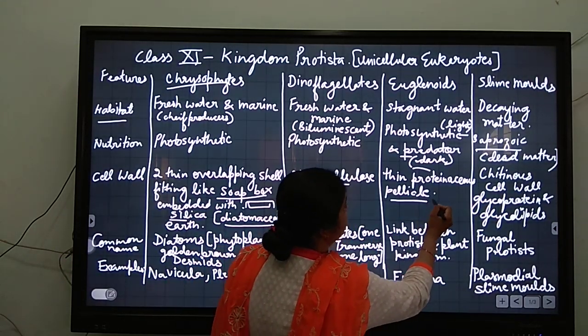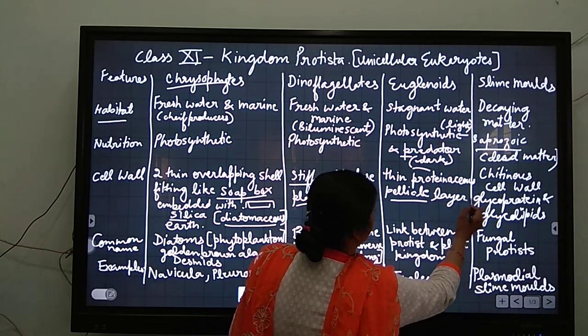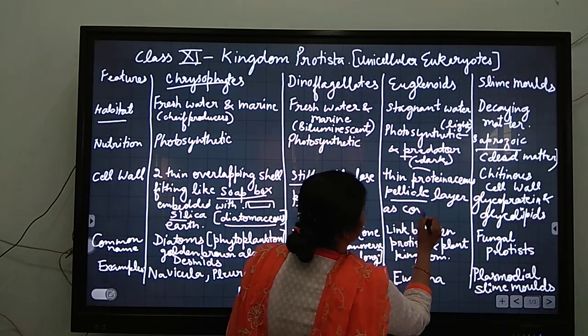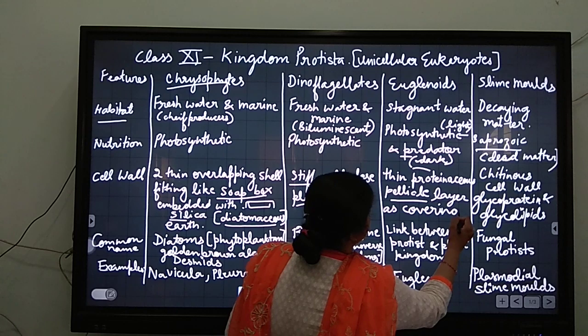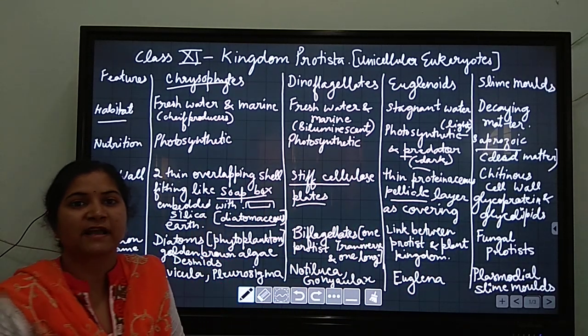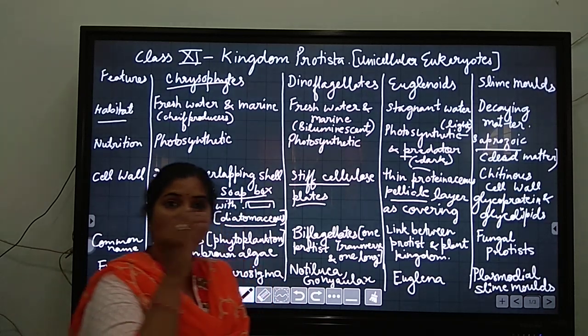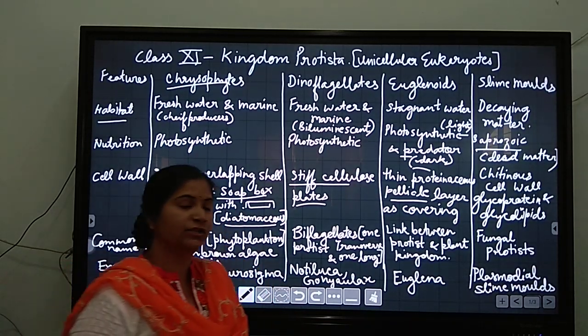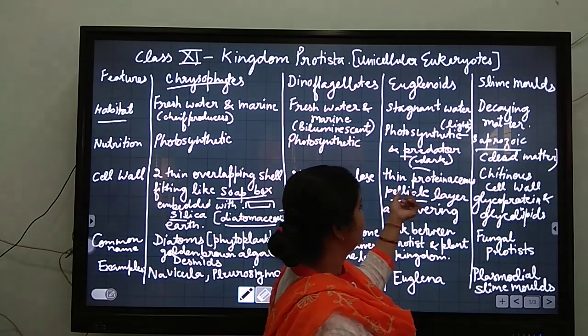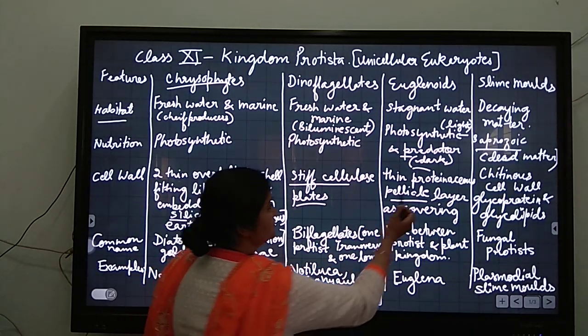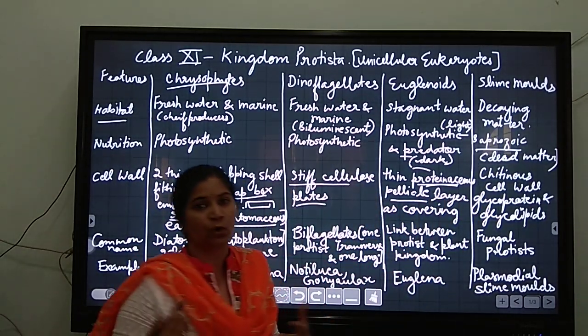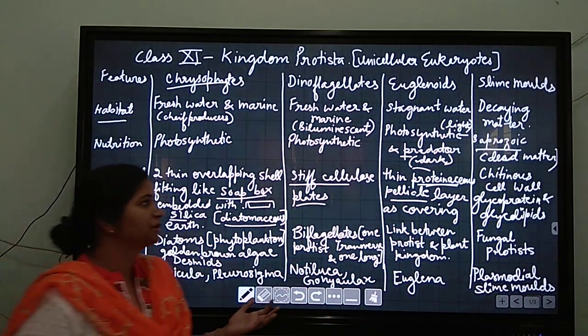Thin proteinaceous pellicle layer is present as a covering in euglenoid. There is a thin protein layer, flexible layer, which is present on the euglena, and one long flagella is present on the euglenoid. The covering is just proteinaceous, made of protein. This is the major feature of euglenoid.